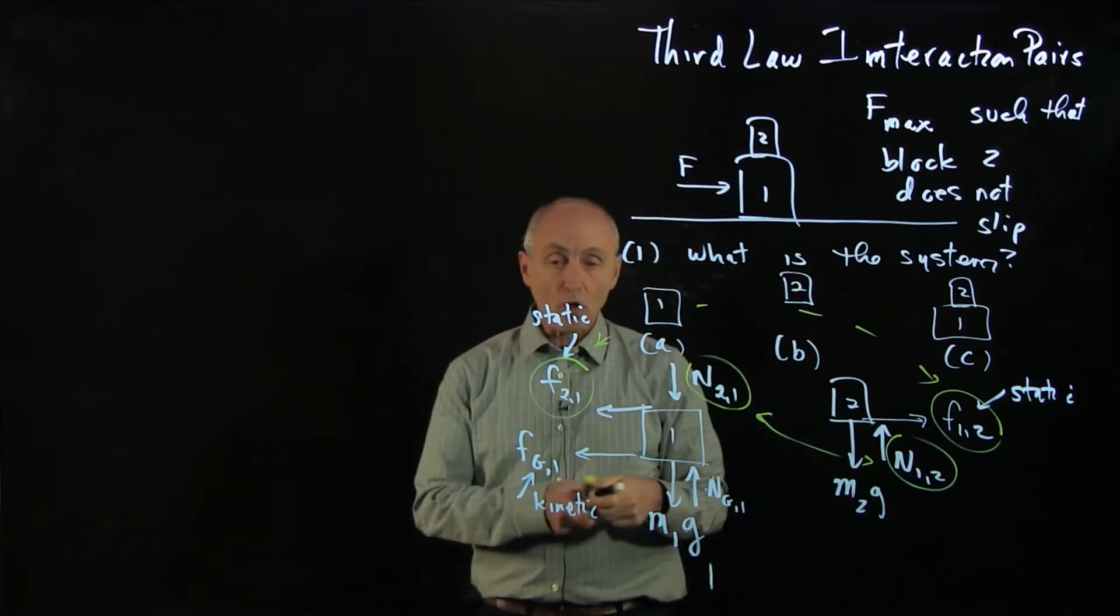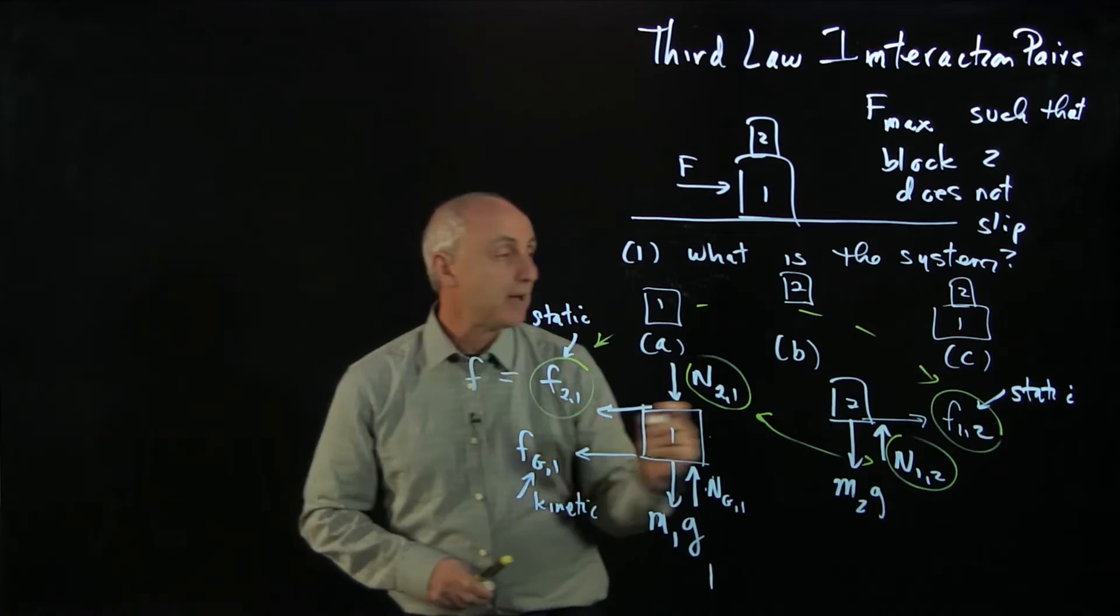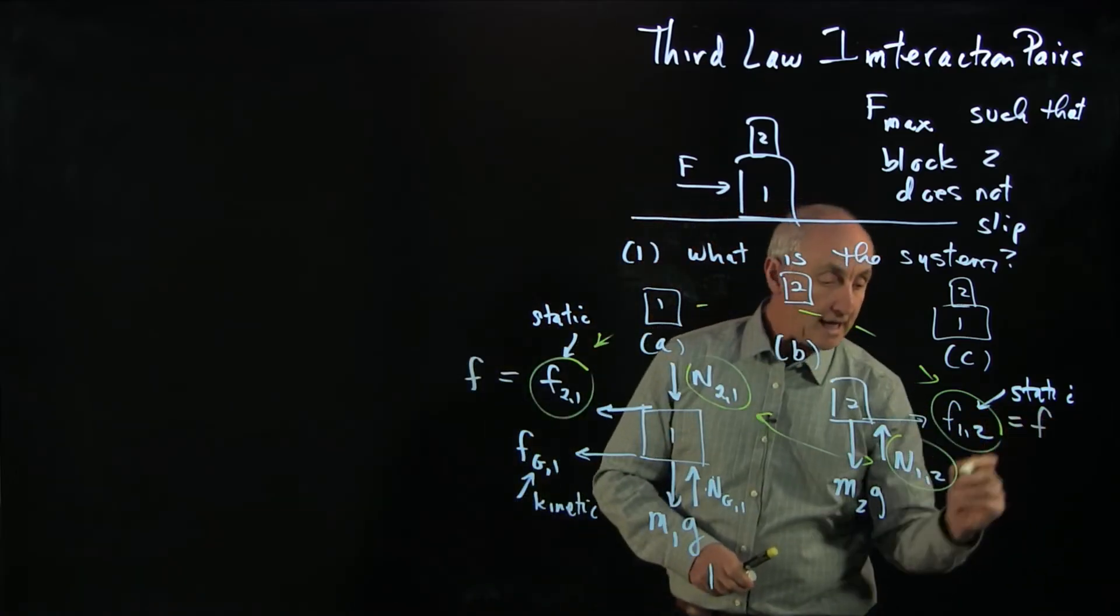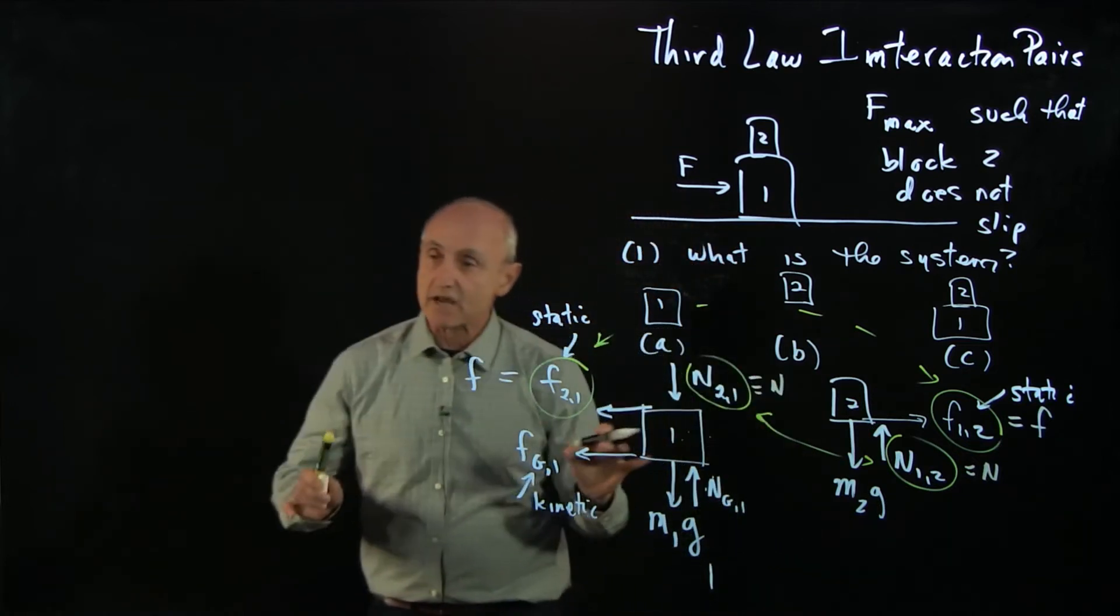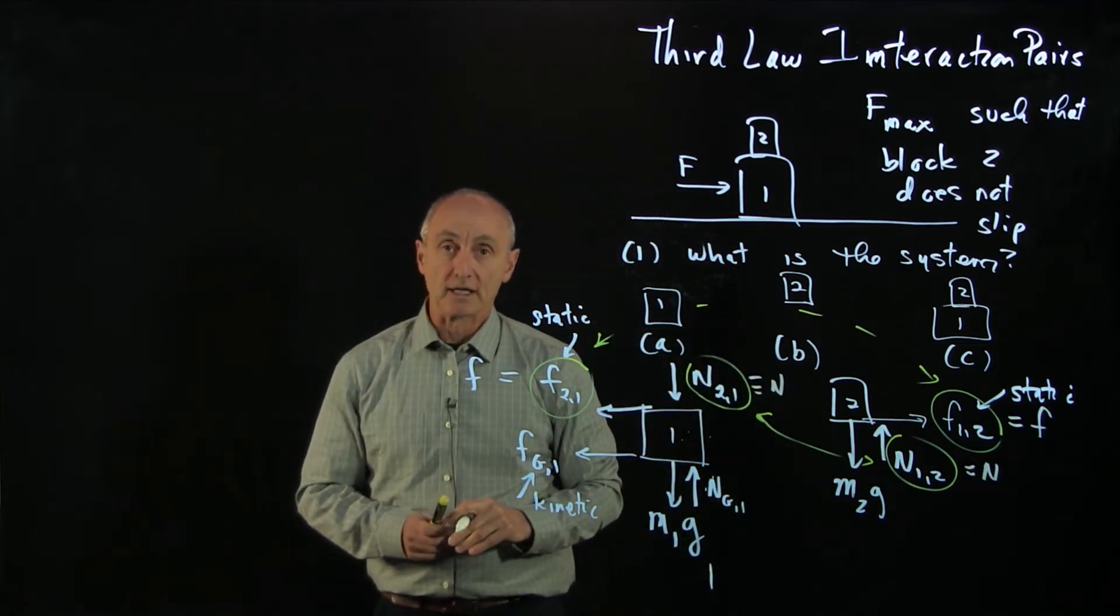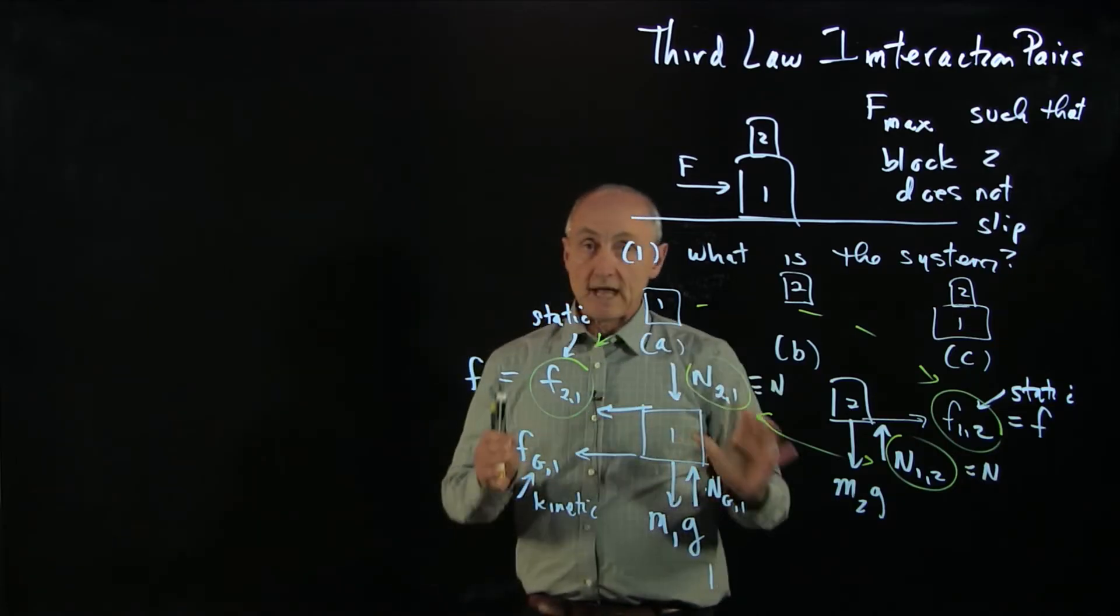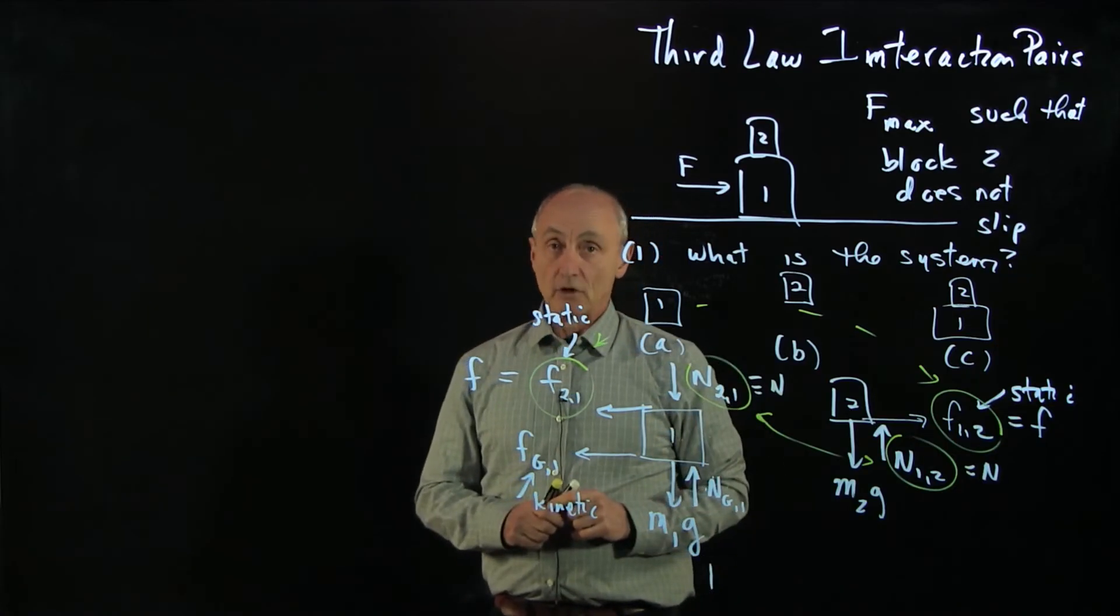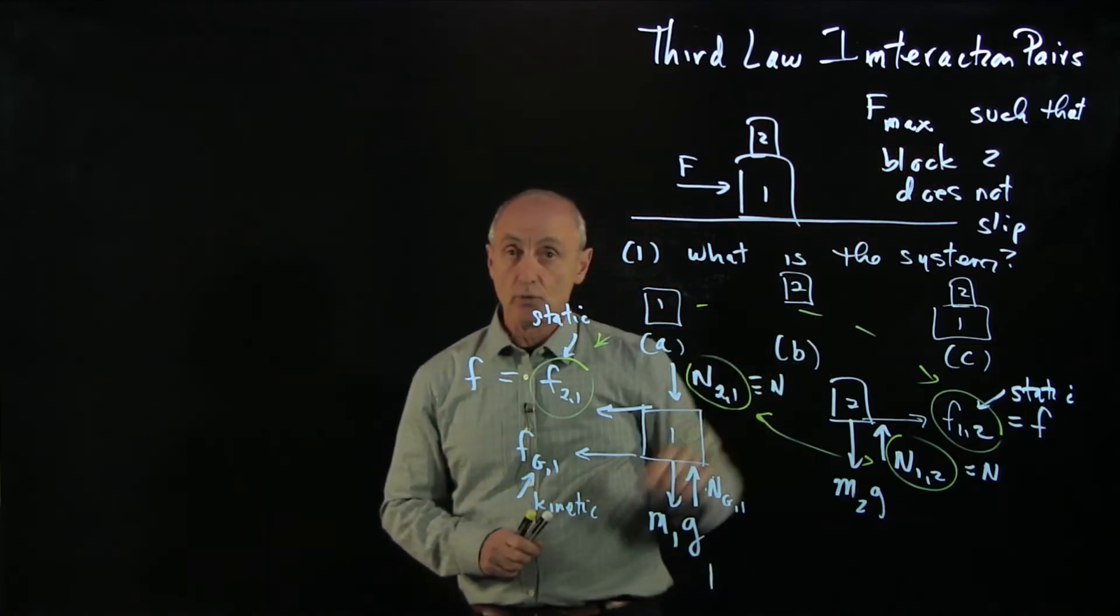Now, we can call these. We know by the third law that they're equal opposite in magnitude. We can identify F. We can call this one N if we want, just to save ourselves the problem of writing a lot of indices. Once we've done that, we're now ready to apply Newton's second law. We haven't yet figured out what the condition is that it will just slip. We'll get to that.